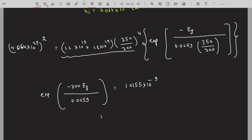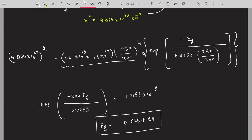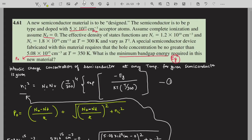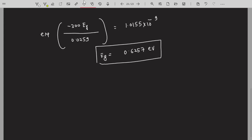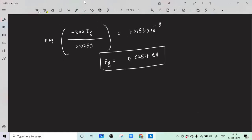So if you want to design a new semiconductor which has the hole concentration like this, acceptor atoms like this, and Nc and Nv like this, you will need to select the material which has a bandgap of 0.6257 electron volts. That's it for this problem. See you in the next problem.